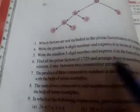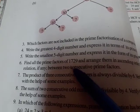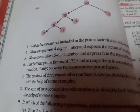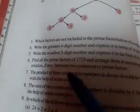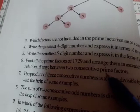Now your sixth question is: Find all the prime factors of 1729 and arrange them in ascending order. Then find the relation, if any, between two consecutive prime factors.